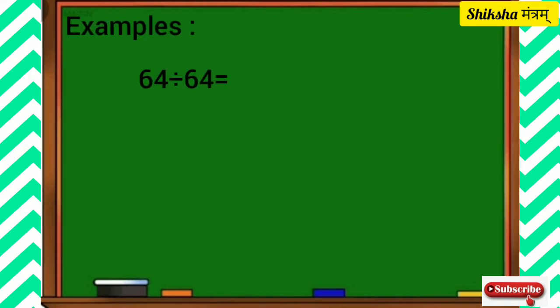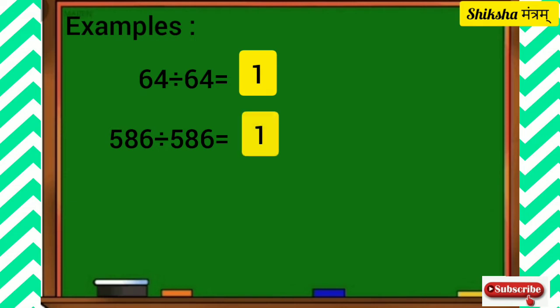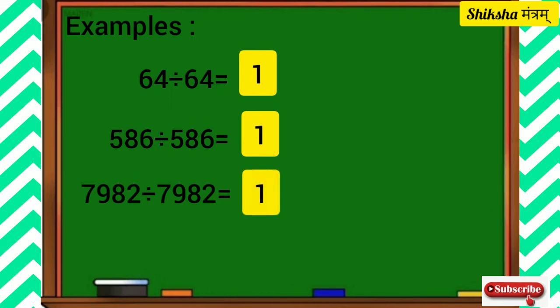64 divided by 64 is equal to 1. 586 divided by 586 is equal to 1. 7982 divided by 7982 is equal to 1. In all the cases, when a number is divided by the number itself, it gives a quotient of 1.